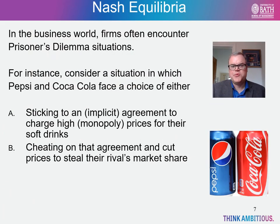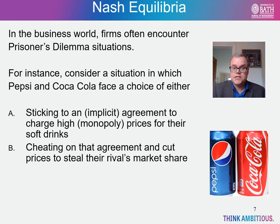In the business world, firms in oligopolistic markets often encounter prisoner's dilemma situations. Consider Pepsi and Coca-Cola — the two dominant players in the cola market, which is almost a duopoly. Each firm faces a choice of either tacitly agreeing to charge a high monopoly price and share joint industry profits, or cheating on that agreement and cutting their price to steal a rival's market share. You can probably see they face a similar choice to our bank robbers.